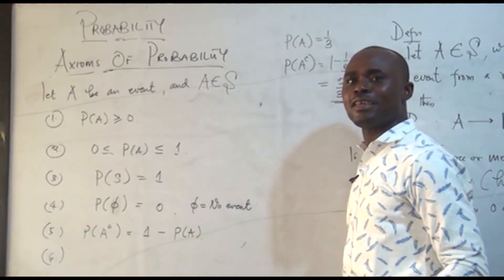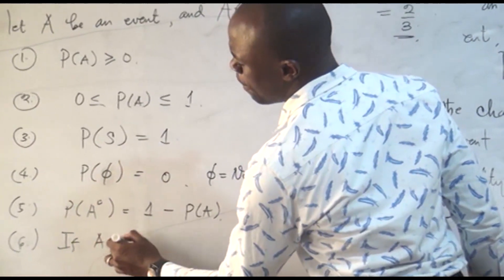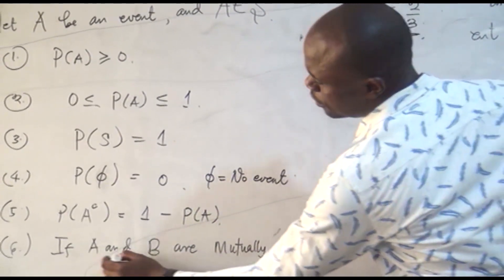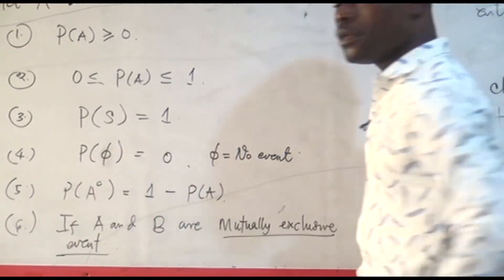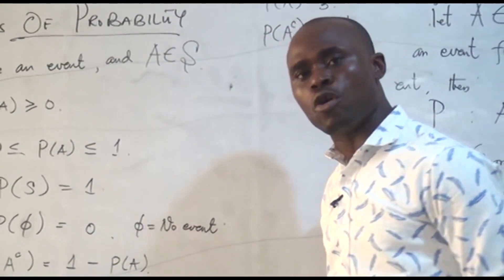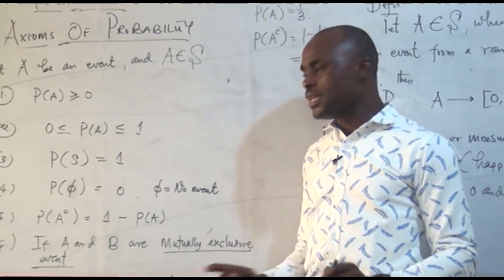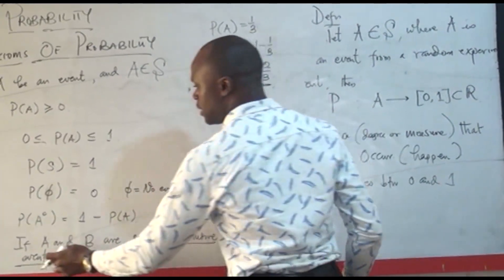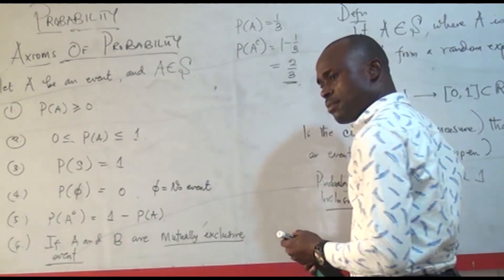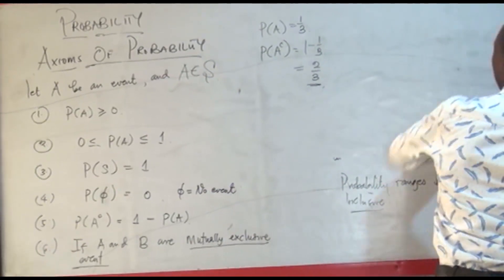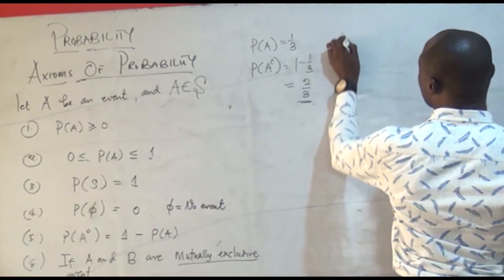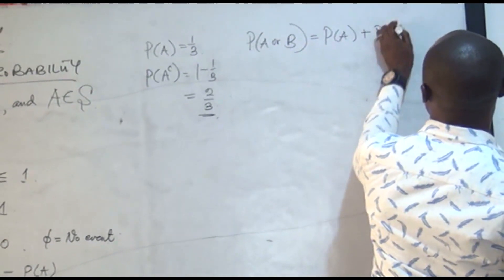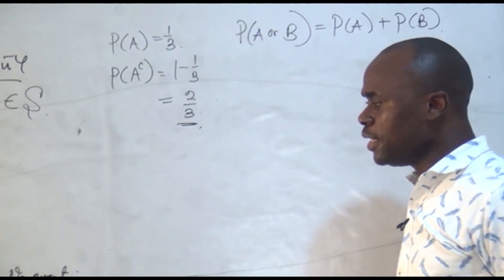Another axiom of probability is that if A and B are mutually exclusive events — meaning they have no common outcome — then A and B cannot happen at the same time. Mathematically, the probability of A or B is simply the probability of A plus the probability of B. Take note that this applies specifically to mutually exclusive events.